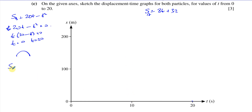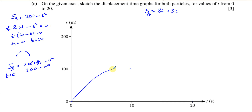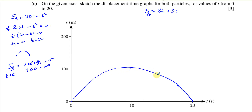At T equals 10, SB equals 20 times 10 minus 10 squared equals 200 minus 100 equals 100. So the maximum displacement of B is 100 meters at T equals 10. At that point the velocity is zero — that's where B reaches instantaneous rest. The gradient of the displacement-time graph is zero there, confirming velocity equals zero before B returns toward O.